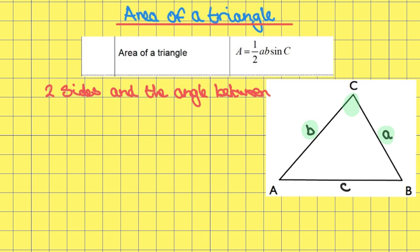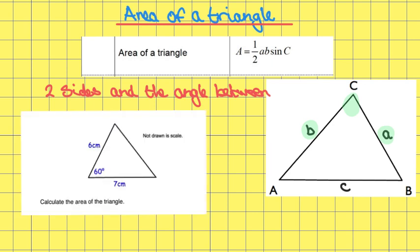Let's find the area of this triangle. We've got two sides of six and seven centimeters with an angle between of 60 degrees.